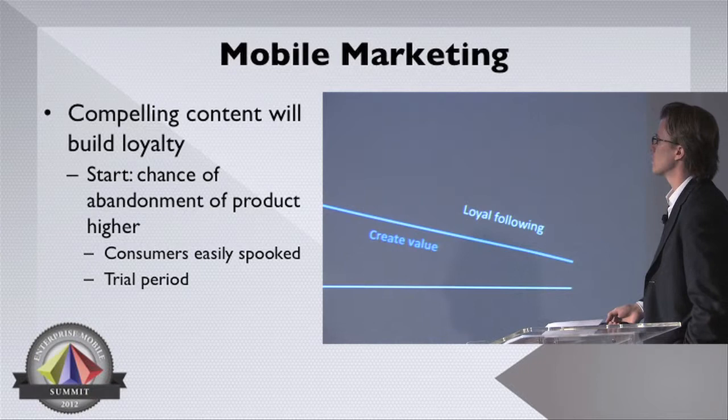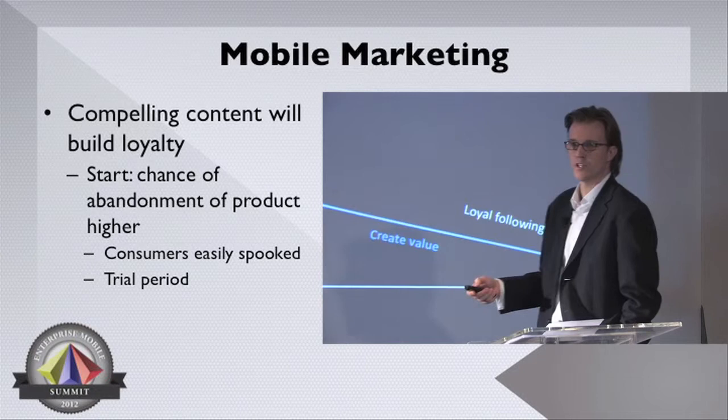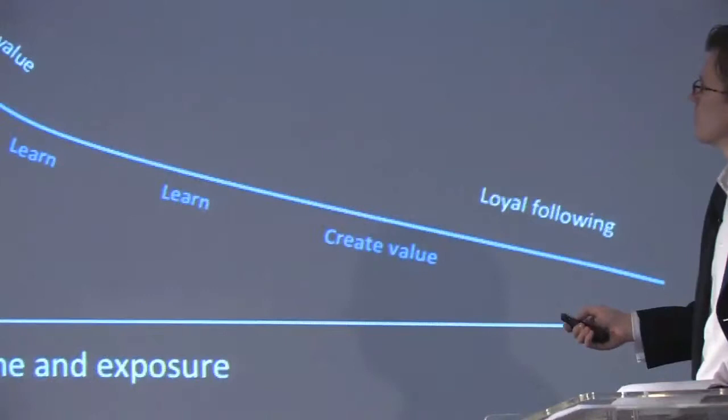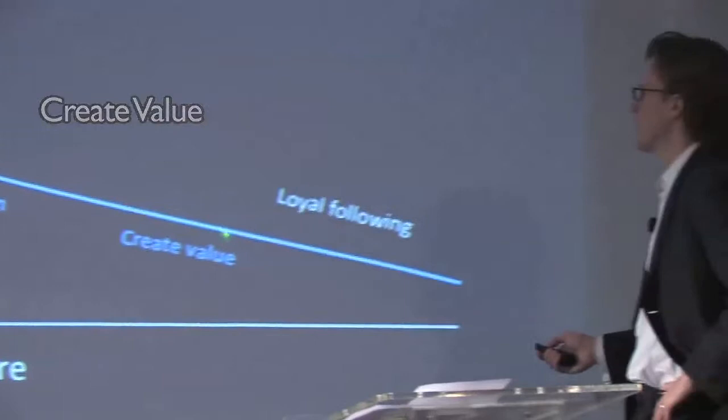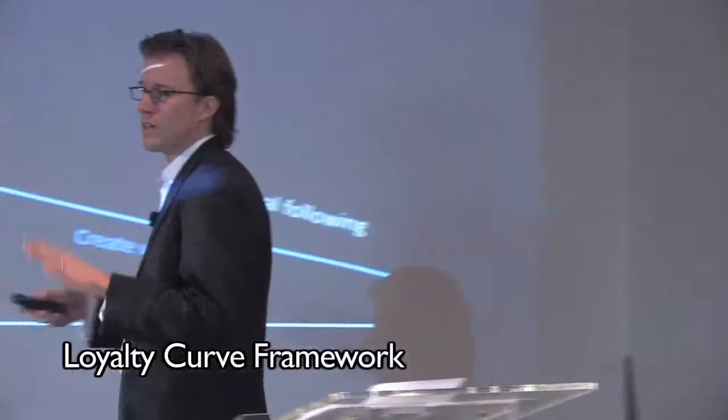This is a graph that we put together and talk about with our clients. In the beginning stages — think of like dating — the chance of somebody opting out of your program are considerably higher with every communication that you send. You're kind of on trial. Consumers are easily spooked, so you've got to be really careful. Everything's got to be right. But the point is you start to create value in that relationship, and as you earn that trust after time and exposure, you've basically earned the right to screw up once in a while and have a lower opt-out rate than if you screwed up in the beginning.